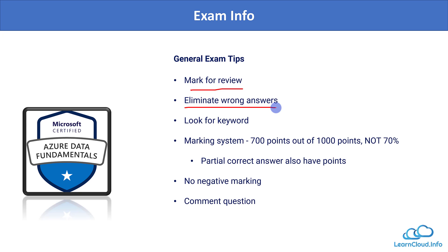Another useful strategy is to eliminate wrong answers. If there are five options and you are not sure of the right answer but can identify two or three wrong ones, eliminating them leaves you with fewer choices for a better guess — giving you a 30 to 50% chance of being correct. Also look for keywords in questions: for example, 'SMB protocol' points to Azure File Storage, and 'graph' points to the Gremlin API in Cosmos DB.